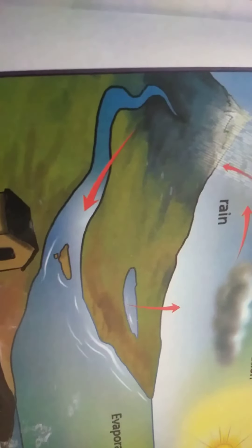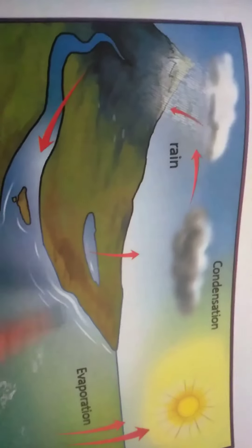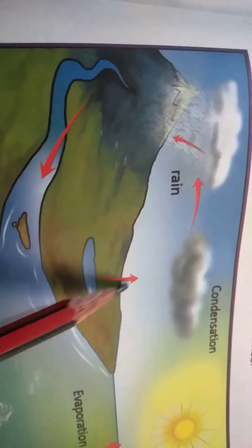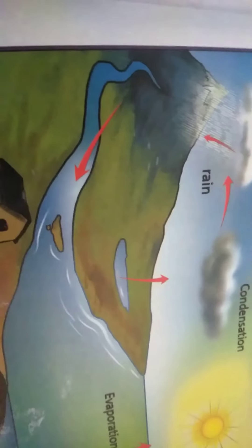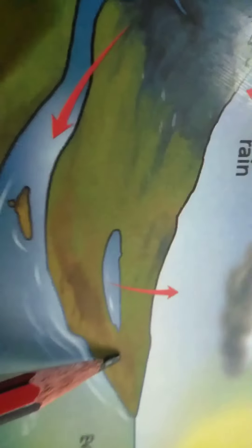Hello children, this is grade 4, block 21 and S3. The topic is water cycle. What is the water cycle and what is its importance — you are going to learn now. Just observe this. Open page number 131, read out the full paragraph and observe the picture.